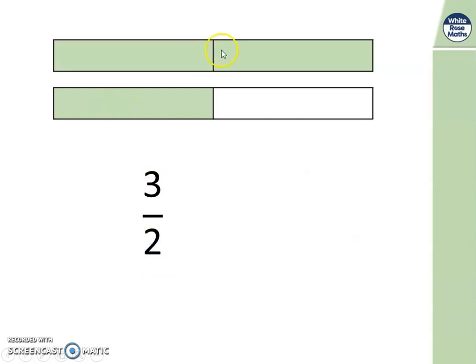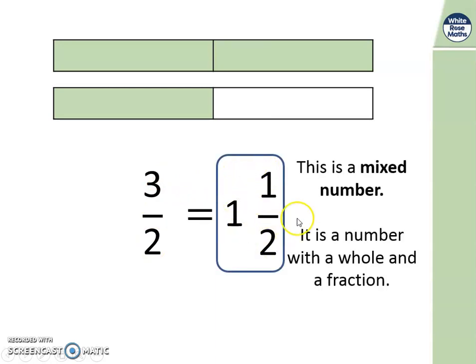Here we've got 2 of those halves. And that makes 1 whole. And here we've got 1 more half. So we can see that 3 halves is equal to 1 whole one and 1 half. This part here is called the mixed number. It's a mix of whole ones and fractions left over. So it's a mixed number.